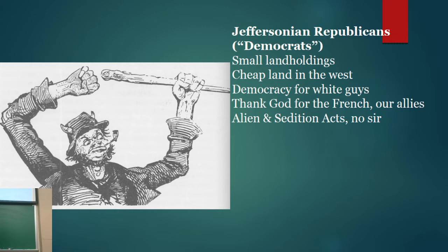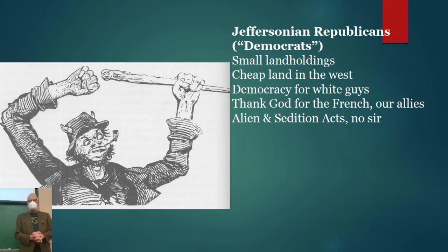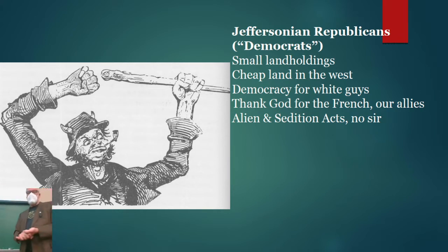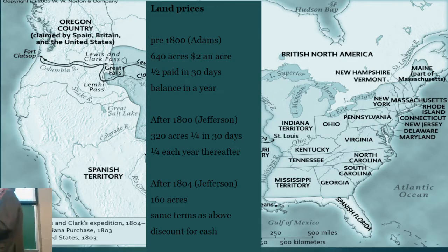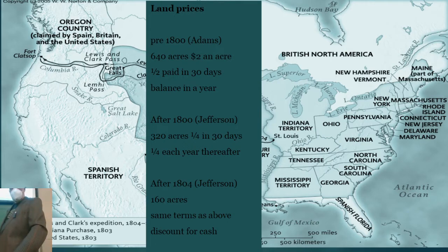We are having a quiz at the end of the class. Remember, the Jeffersonian Republicans supported small land holdings—they tended to be people with small land holdings. Their policy was cheap land in the West. They believed in democracy, but really for white men. They tended to support the French and they opposed the Alien and Sedition Act. Jefferson basically made it a campaign promise to lower land prices, and he did that.